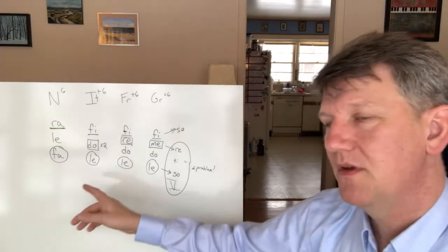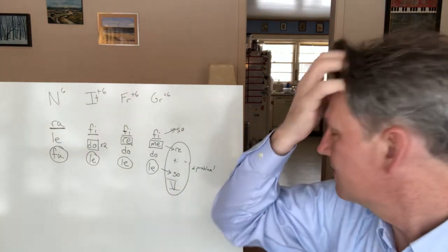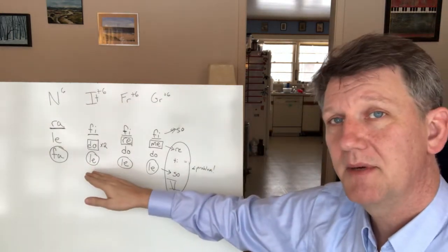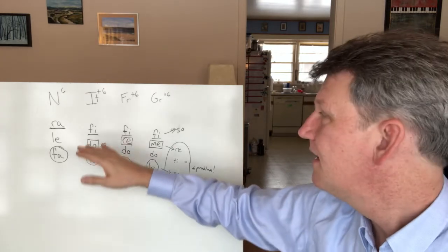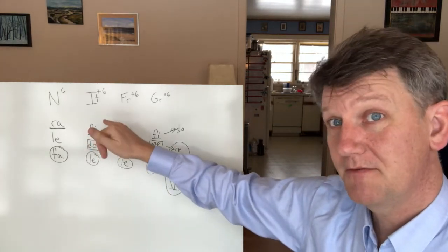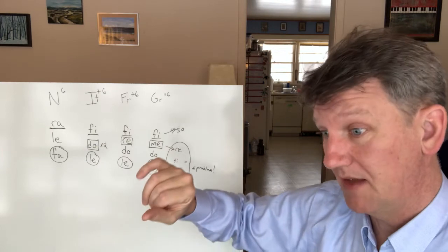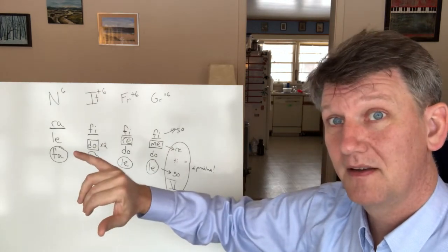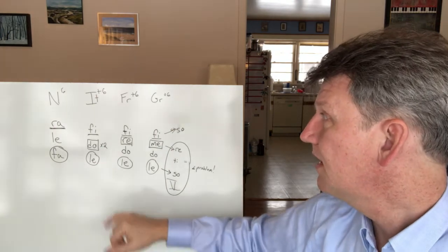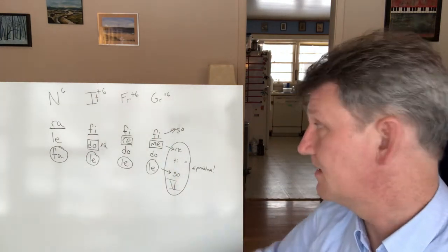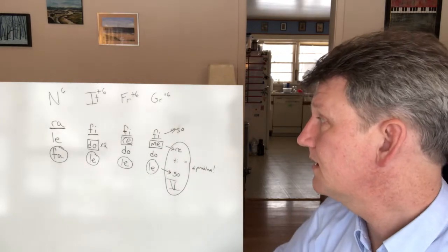So with the augmented sixth chords, again, look for Le in the bass. If there's not Le in the bass, then you have something else going on. Listen for whether there's a Fi. So you have that outward movement to So. And then these chords just treat the other notes differently. They all have Do in them.